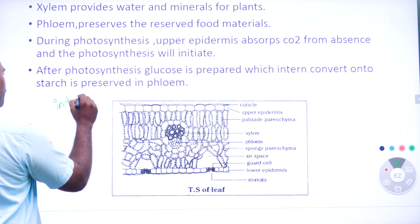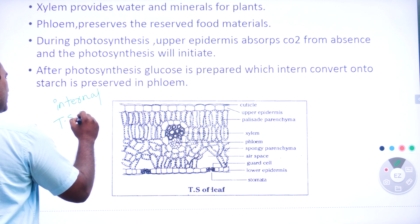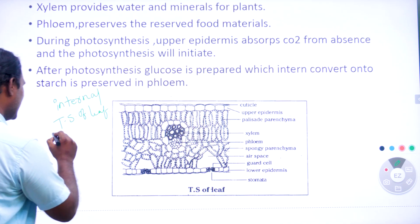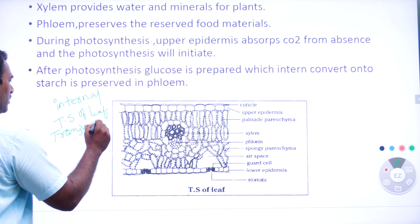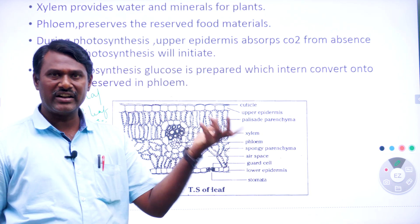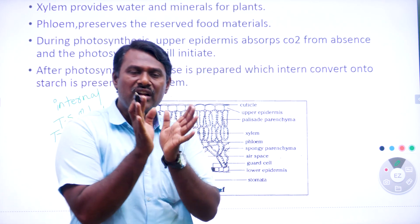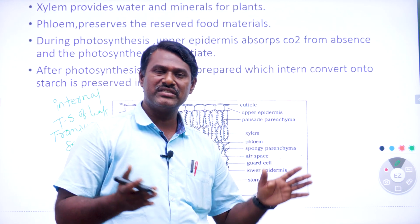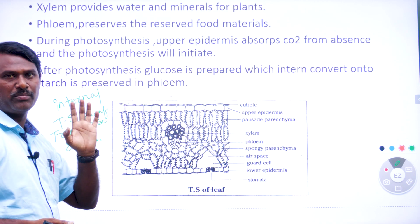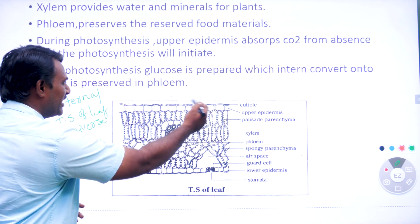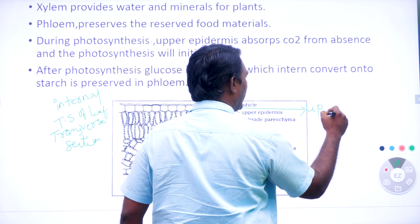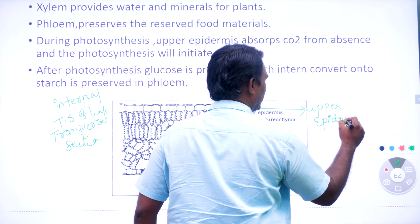The internal structure of leaf we can also call as TS of leaf — TS means transverse section. If we cut the leaf horizontally we can see its TS. When we observe the TS of leaf, it consists of two layers: this is called upper epidermis and the bottom one is called lower epidermis.